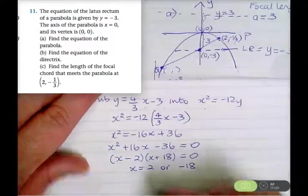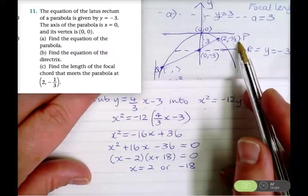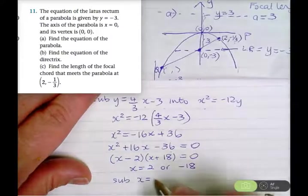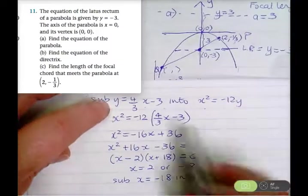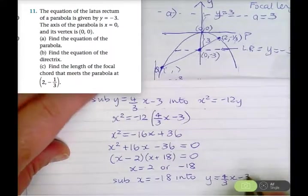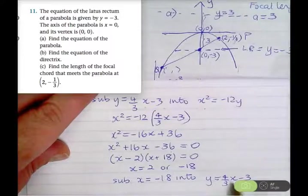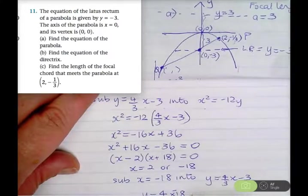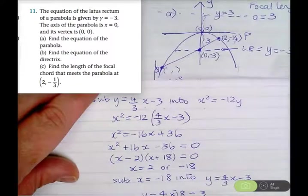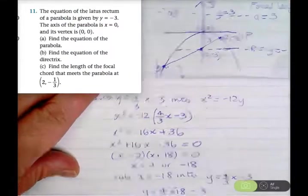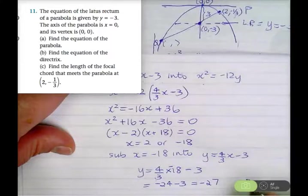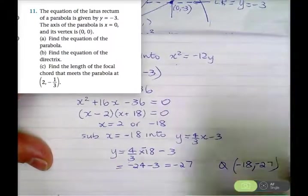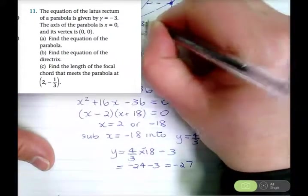Substituting x equals negative 18 into y equals 4 over 3 x minus 3 gives y equals 4 over 3 times negative 18 minus 3. Since 3 goes into 18 six times, we get 4 times negative 6 equals negative 24, minus 3 equals negative 27. So the coordinates of Q are (negative 18, negative 27).